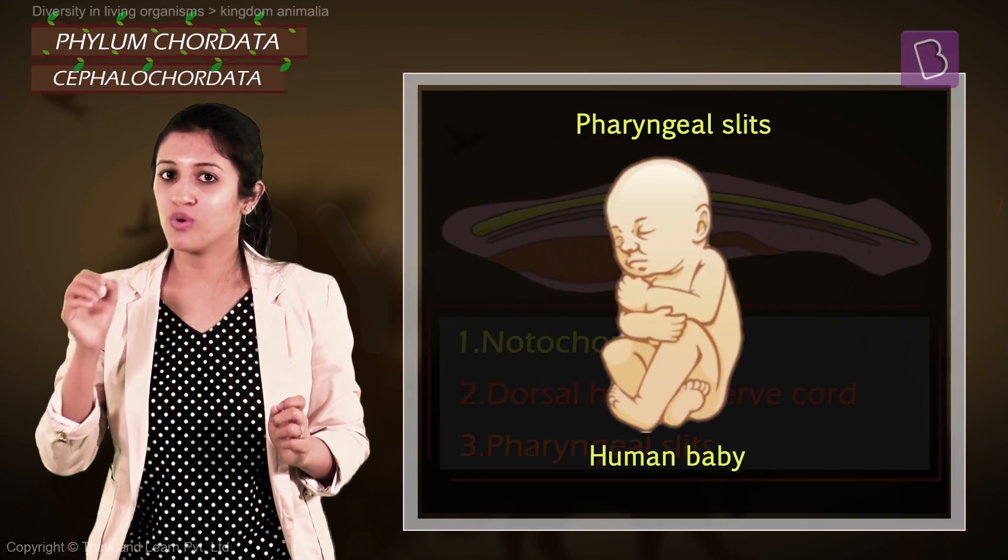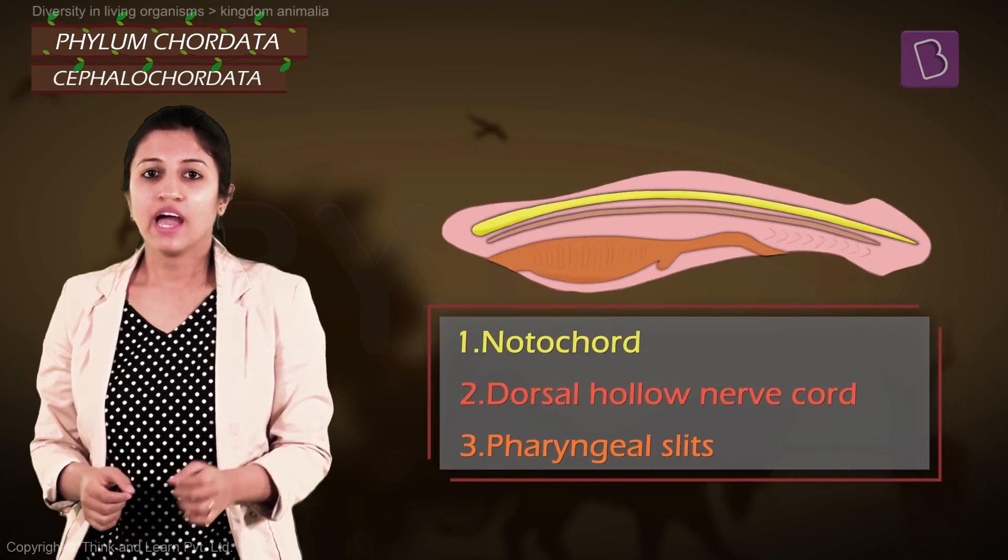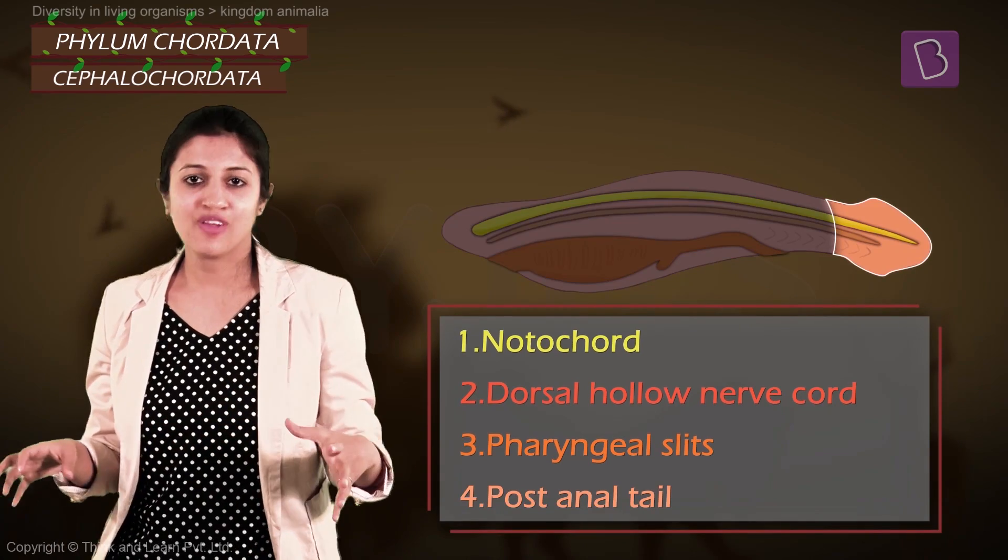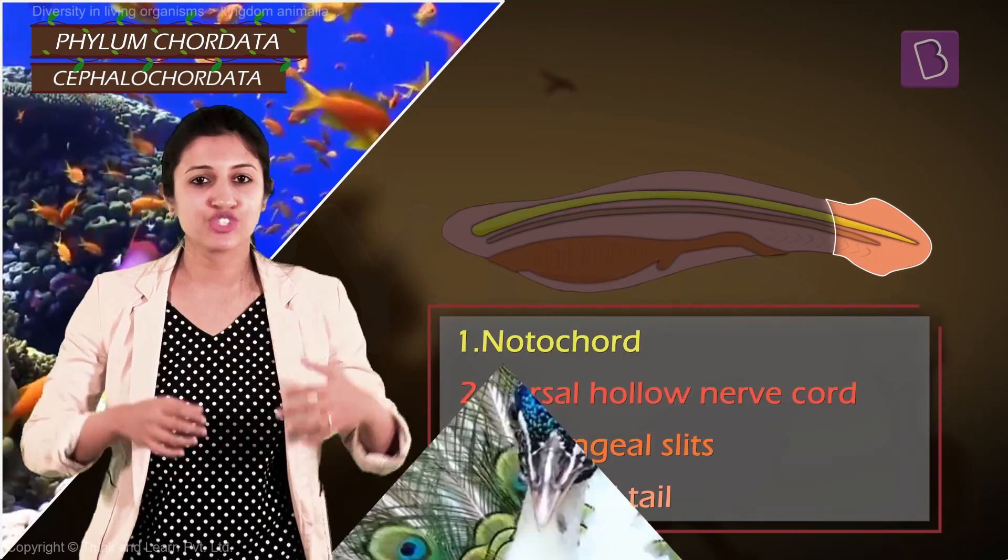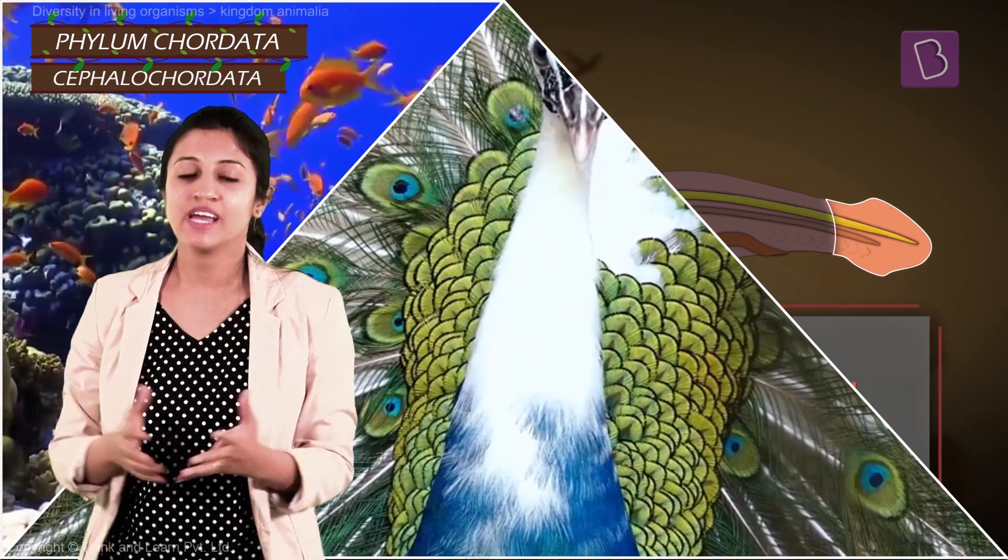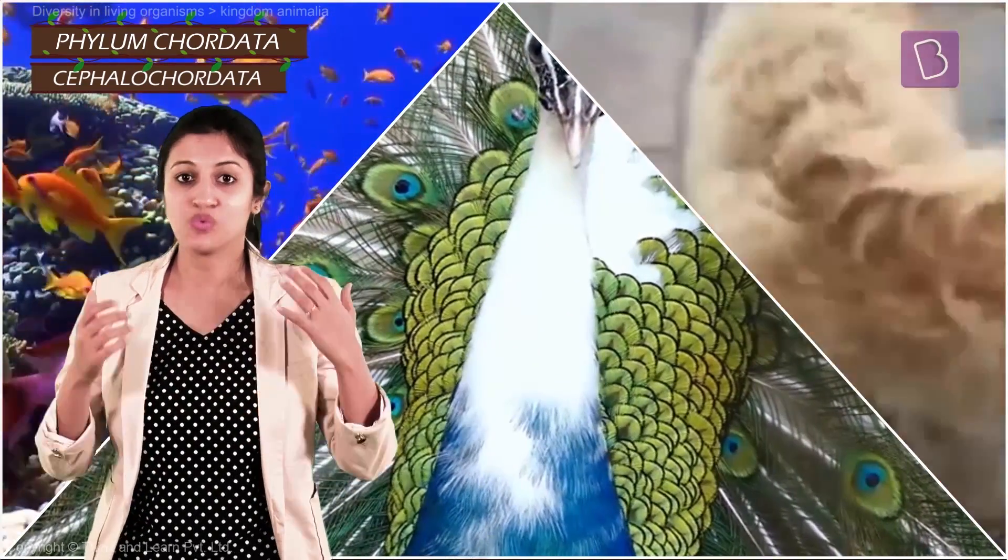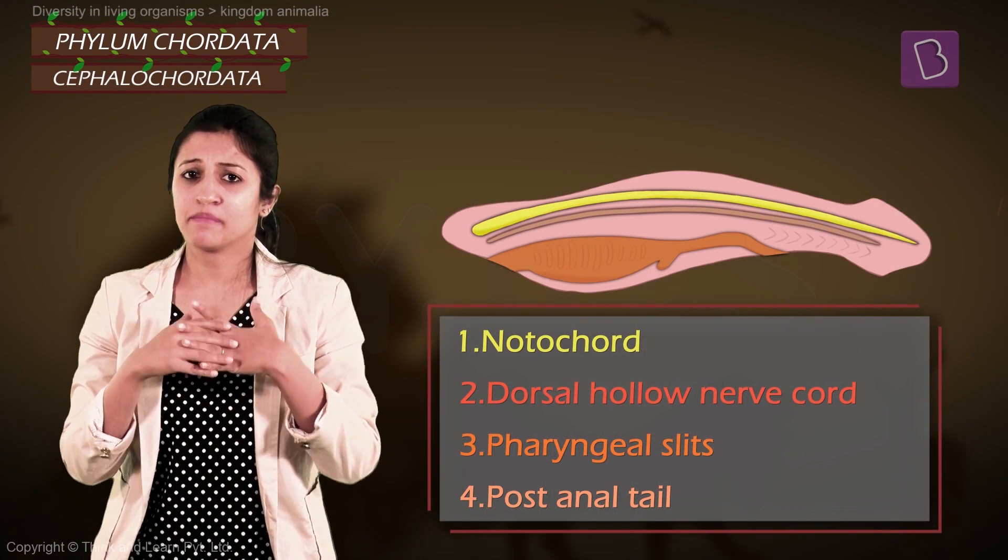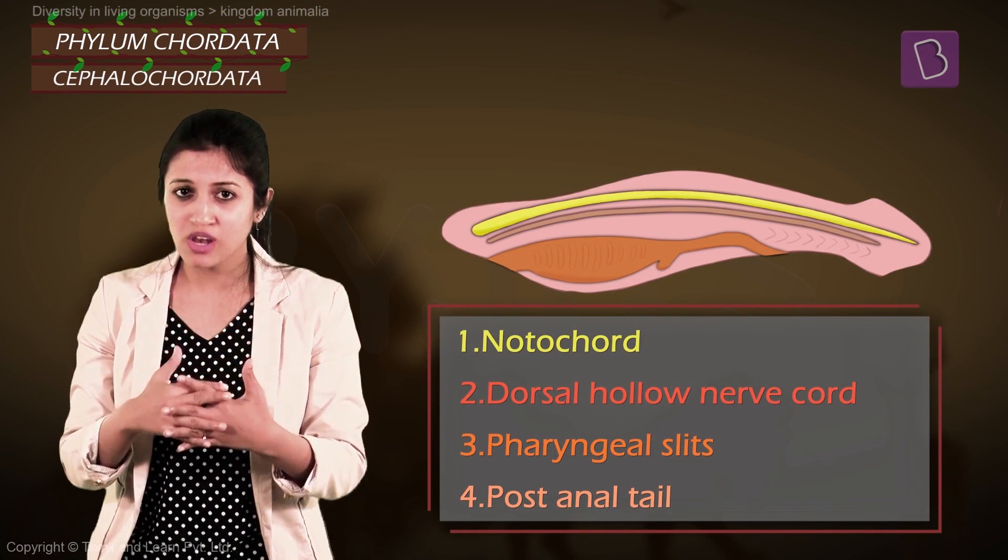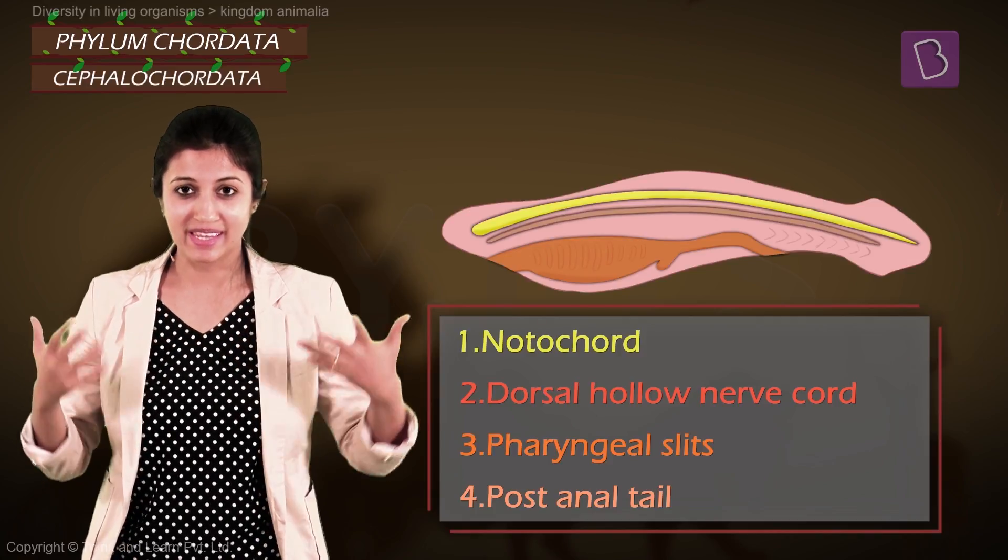And finally the tail, which helps aquatic animals swish through water, peacocks show them off and make them so attractive, and our pet dogs let us know when they are super happy. And in us, well, it shrinks and becomes insignificantly small because we actually don't need them at all.